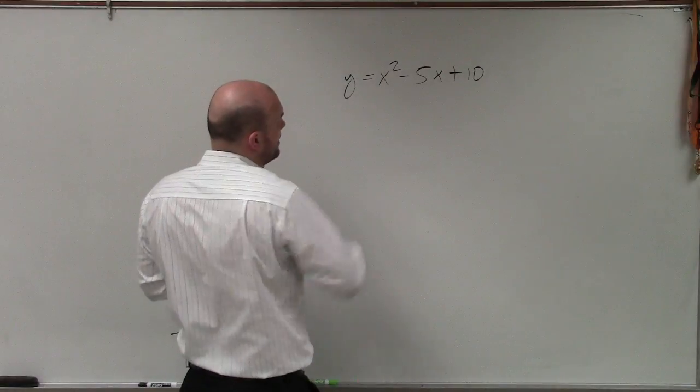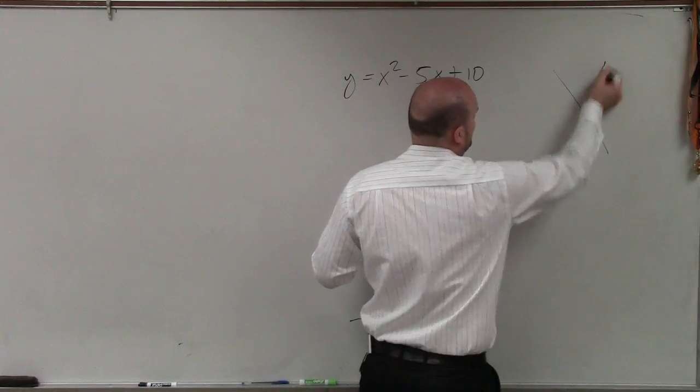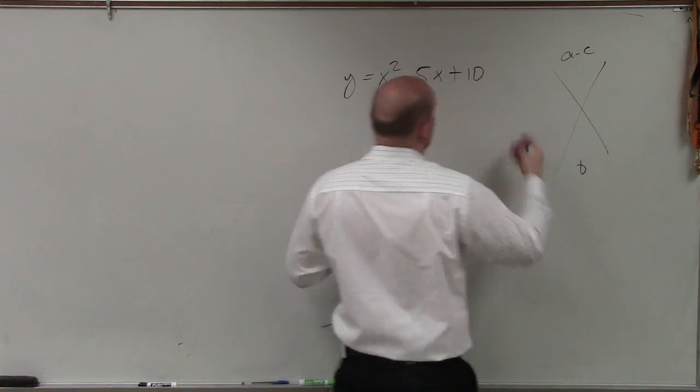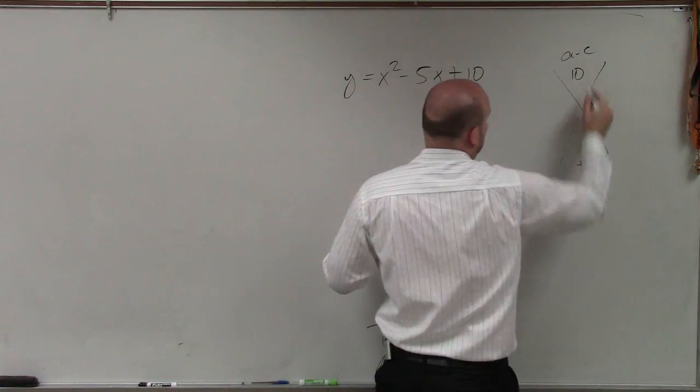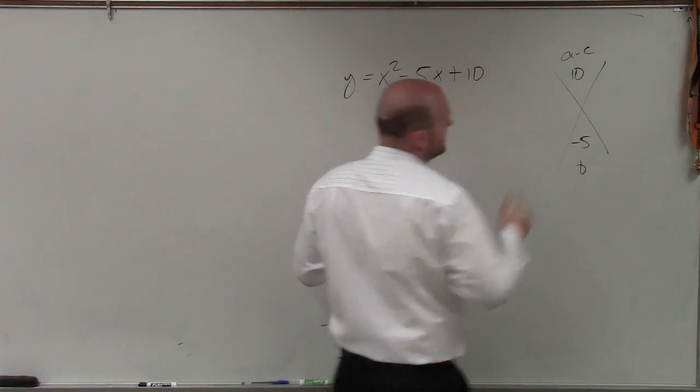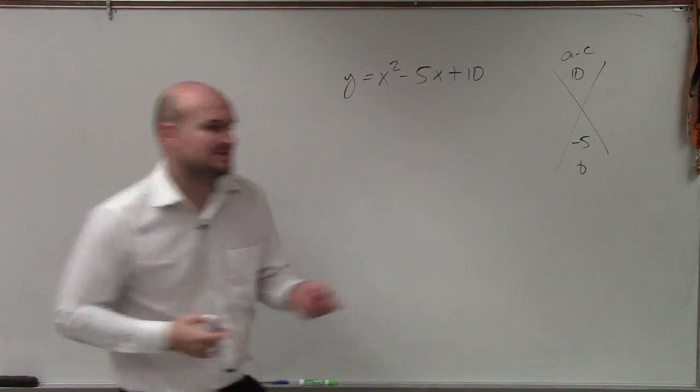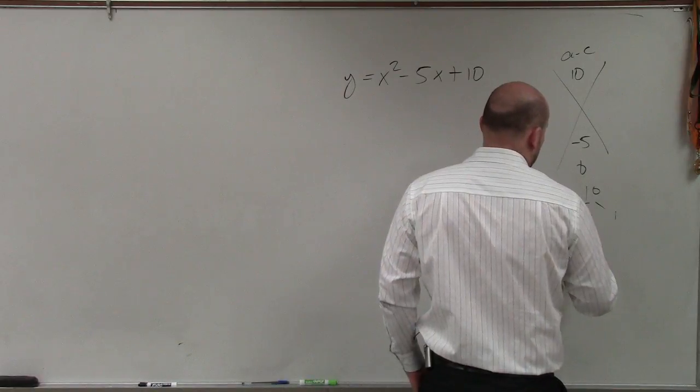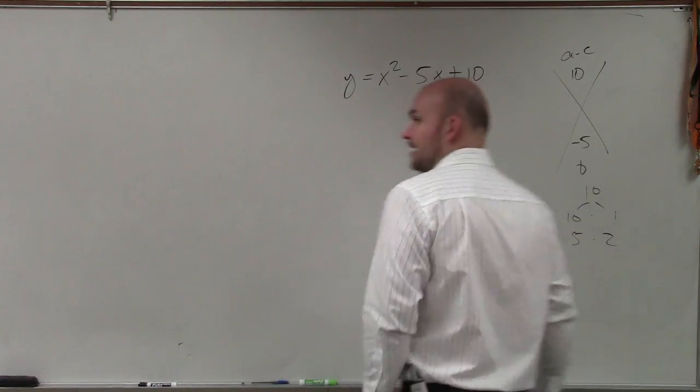Now, if I was going to typically go ahead and solve this by factoring, you know, create your nice little diamond here, and I'd say you're my a times c and my b. And if you guys remember, we'd multiply. What two numbers multiply to give you 10, but then add to give you negative 5? Well, when we start listing our factors of 10, I do 10 times 1, 5 times 2. And it kind of comes up to me, crap,